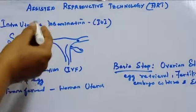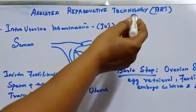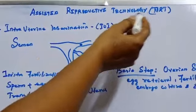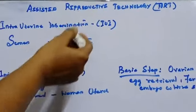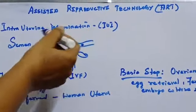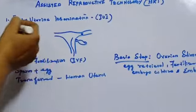In the previous class we have seen the introduction to assistive reproductive technology. In this class we will see the methods.